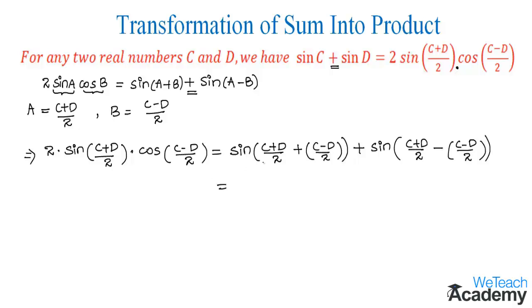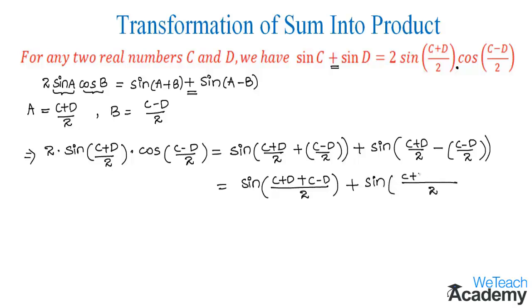Now let us simplify the RHS. We take LCM with common denominator 2. In the numerator of the first term we get (c plus d) plus (c minus d), and in the second term we get (c plus d) minus (c minus d), which gives us minus c and plus d. In the first term, plus d and minus d cancel, and in the second term, c and minus c cancel.